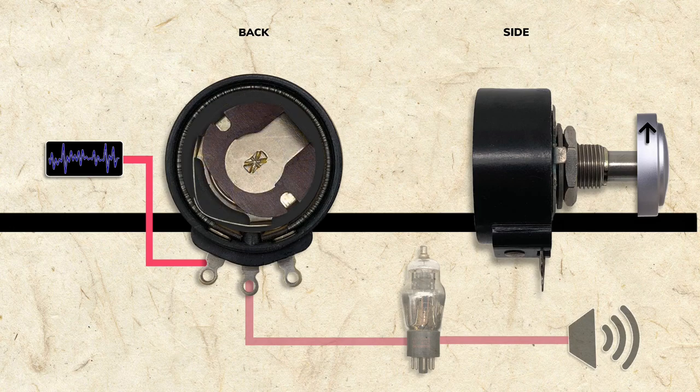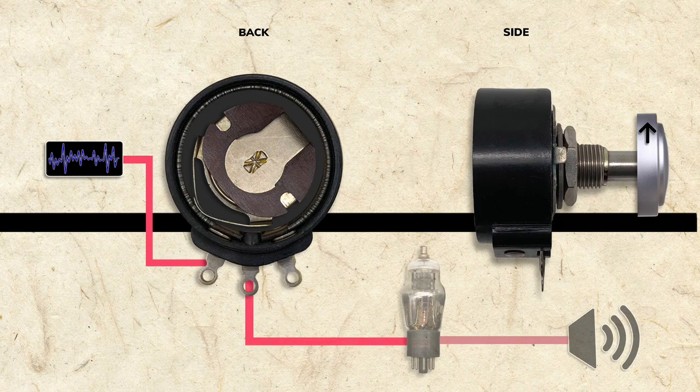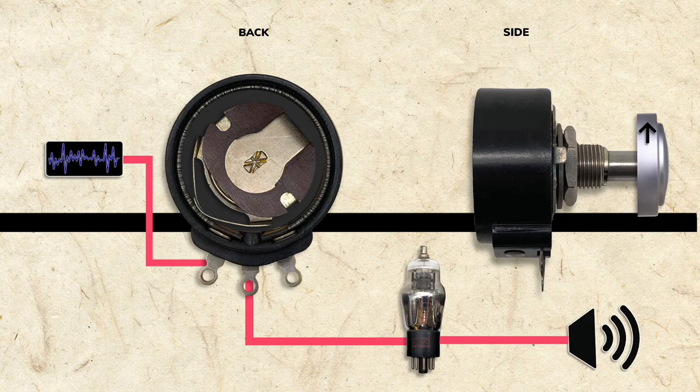When the knob is turned fully clockwise, resistance is lowest, circuit strength increases and volume is at maximum.